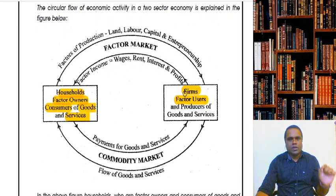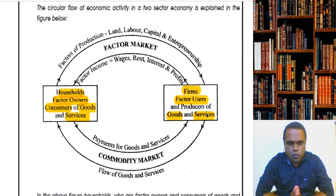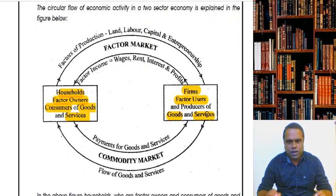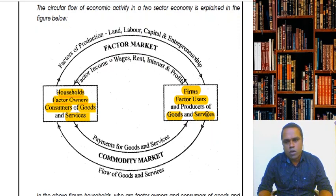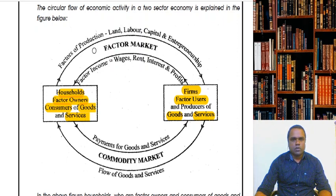Now I'm going to explain how this flow takes place through the diagram. If you understand the diagram, you can understand it very well. The next three short notes can be derived by modifying this diagram. Let's look at this diagram. Households are the owners of factors of production. The factors of production are land, labor, capital, and entrepreneurship.